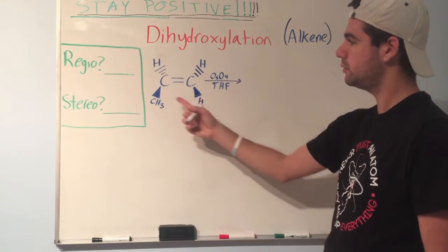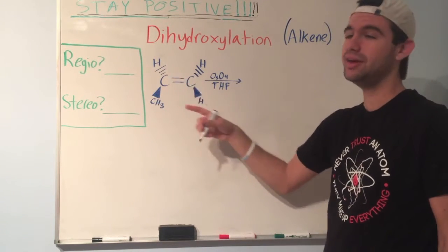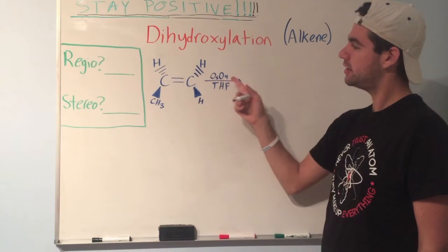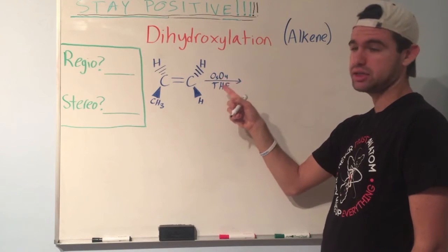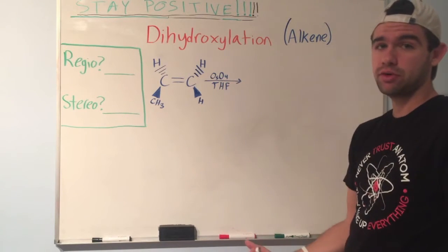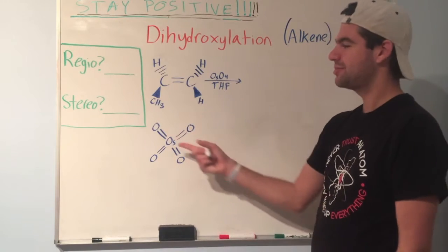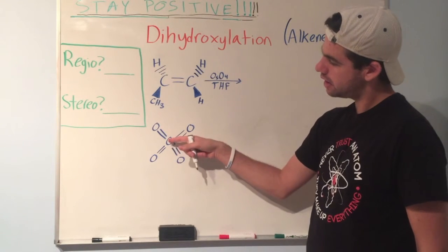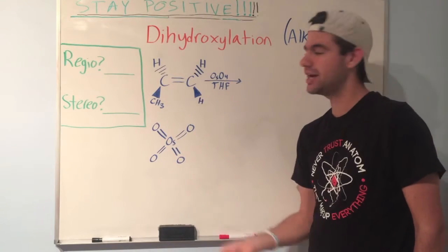Here we have an alkene. We have one carbon attached to a methyl, so this is more substituted — it doesn't really matter so much in this case. We're going to react it first. The first step was osmium tetroxide and THF. Let's go ahead and draw osmium tetroxide. It has a pretty cool structure: a central osmium double bonded to four oxygen atoms.